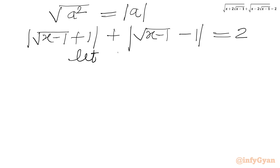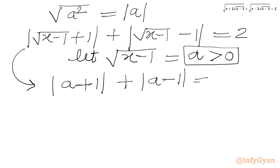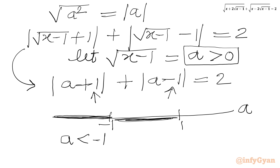Now I will let √(x−1) = a. For real x, a must be positive or zero — that is our condition on a. So the equation becomes |a + 1| + |a − 1| = 2. We have two critical points: −1 and 1. Drawing a number line, there are three intervals or cases: Case 1 where a < −1, Case 2 where a is between −1 and 1, and Case 3 where a ≥ 1.